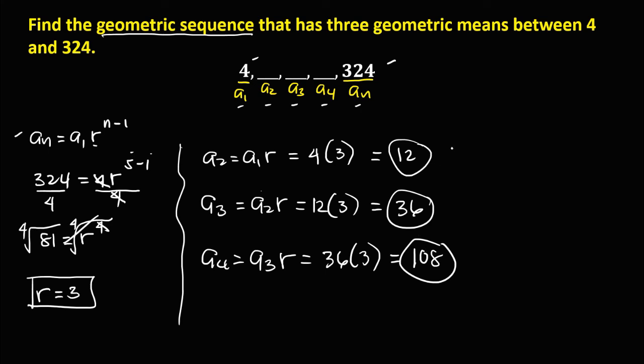So these are the three geometric means between positive 4 and positive 324.